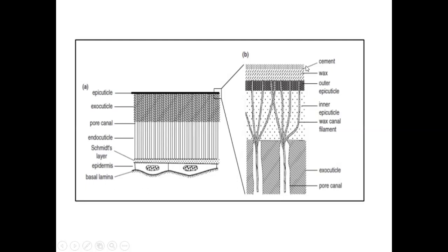The outermost layer of the epicuticle is the cement layer; below it is the wax layer, though it is not present in all insects. Then comes the outer epicuticle, the inner epicuticle, wax canals or wax filaments, and the exocuticle with pore canals. Pore canals are broader than the wax canal filaments.